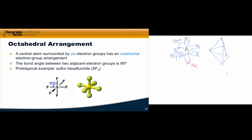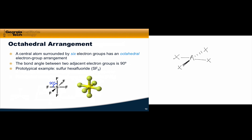The largest steric number we typically see is 6, and for 6 electron groups we arrive at the octahedral arrangement. This starts with a central atom surrounded by 4 atoms pointing to the corners of a square — one bond coming out towards us, one going back, and two bonds in the plane at right angles — forming a square planar structure. Adding two axial groups above and below the square plane gives the octahedral arrangement. Importantly, all positions within the octahedral arrangement are equivalent — there is no axial or equatorial distinction — and all bond angles are 90 degrees. A typical example is sulfur hexafluoride, SF₆.